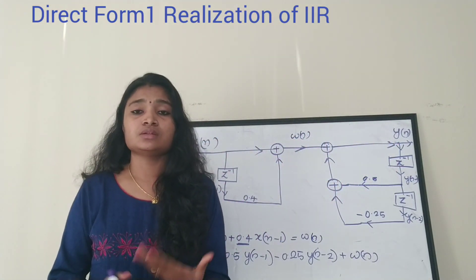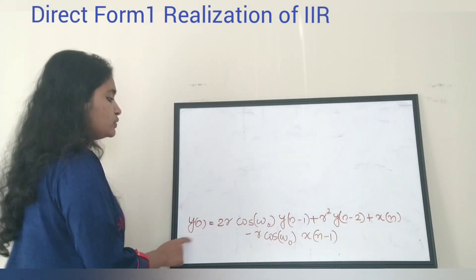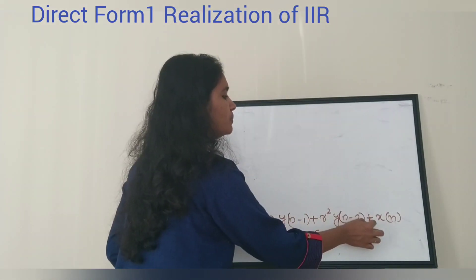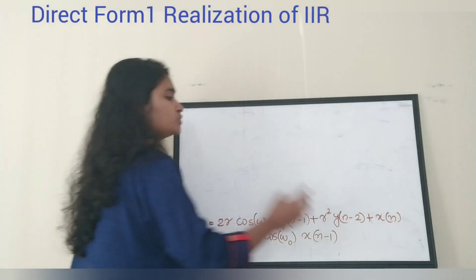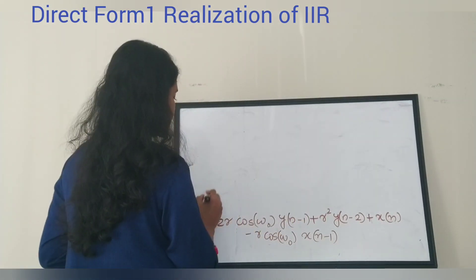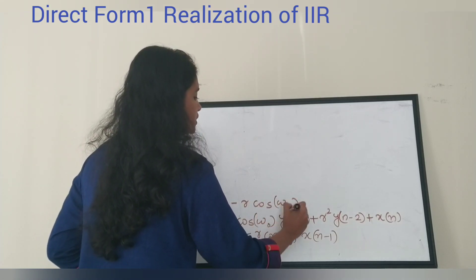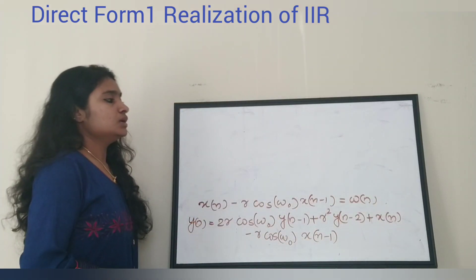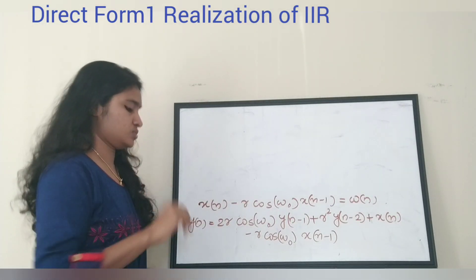Now we will do another problem on direct form 1 realization. The next transfer function to realize is: y(n) = 2r·cos(ω₀)·y(n-1) + r²·y(n-2) + x(n) - r·cos(ω₀)·x(n-1). First, take the x(n) terms together to form the intermediate variable w(n): w(n) = x(n) - r·cos(ω₀)·x(n-1). Now we can draw the direct form 1 realization.